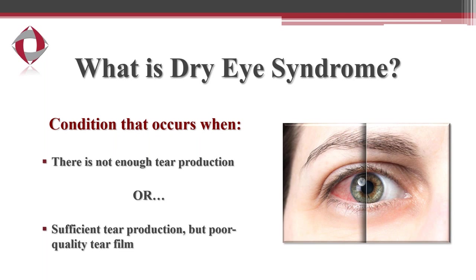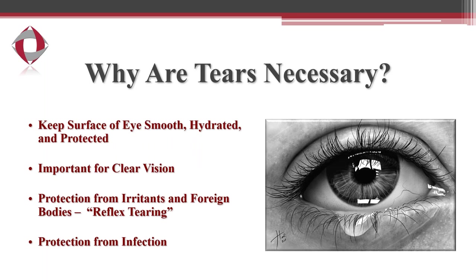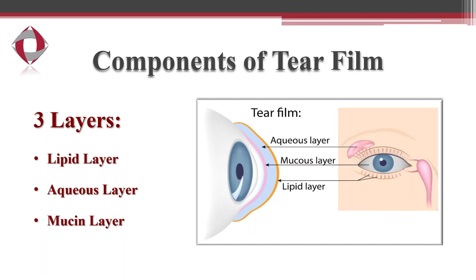Dry eye syndrome is simply a condition that occurs when there's not enough tear production, or you have sufficient tear production but a poor quality tear film. Tears help keep the surface of the eye smooth and hydrated and are very important for clear vision. If you have a poor quality tear film, you're going to have poor quality vision. They're also important for protecting the eye against irritants and foreign bodies, and they provide some degree of protection from infection.